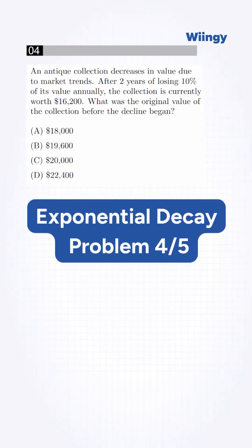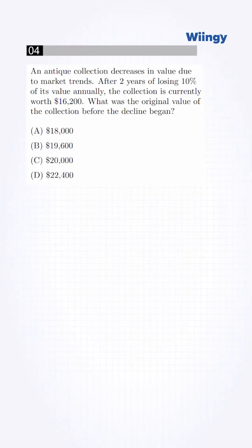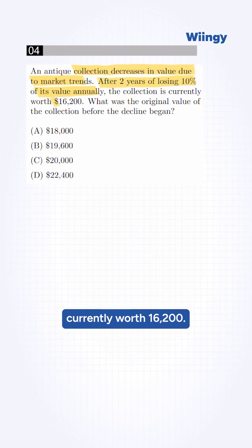Don't try to solve for the original amount without considering the decay over two years. The question says the collection decreases in value due to market trends. After two years of losing 10% of its value annually, the collection is currently worth $16,200. What is the original value of the collection before the decline began?